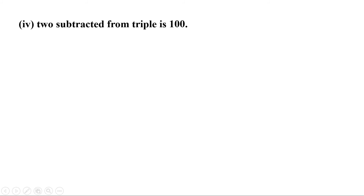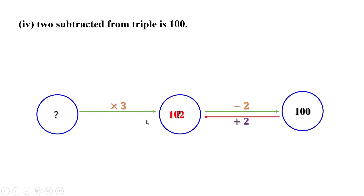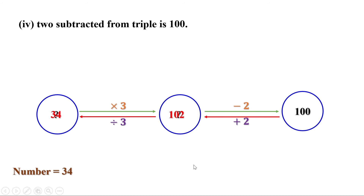Part 4: 2 subtracted from triple is 100. First multiply by 3, then subtract 2 to get 100. Coming back: add 2 to get 102. That is 3 times the number, so divide by 3 to get 34. The number is 34. Check: triple 34 is 102, and when 2 is subtracted it is 100. So the answer is right.